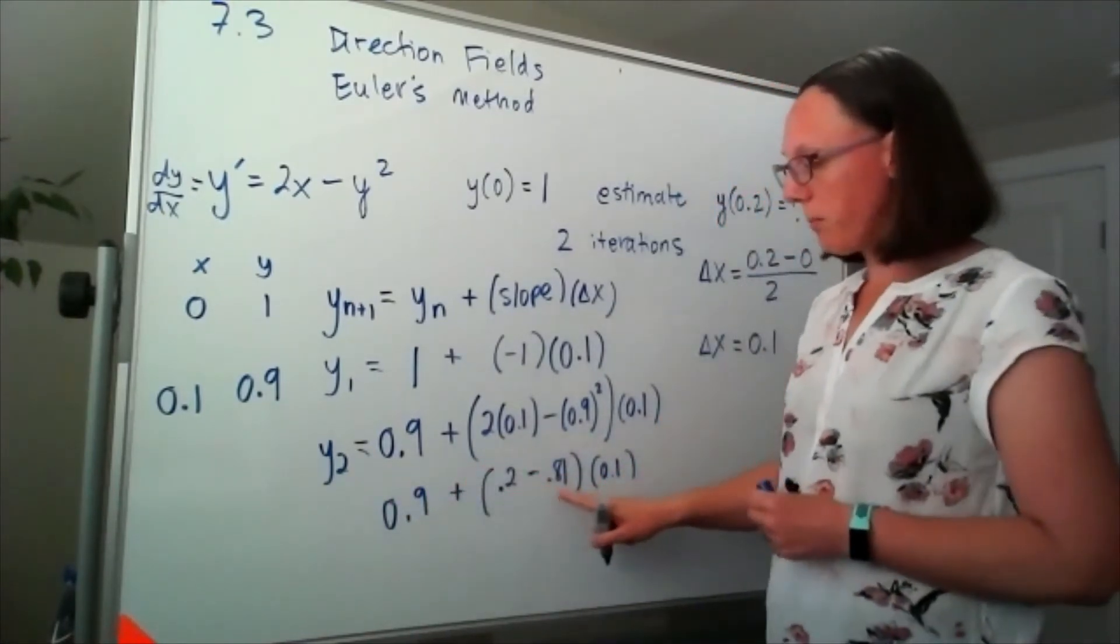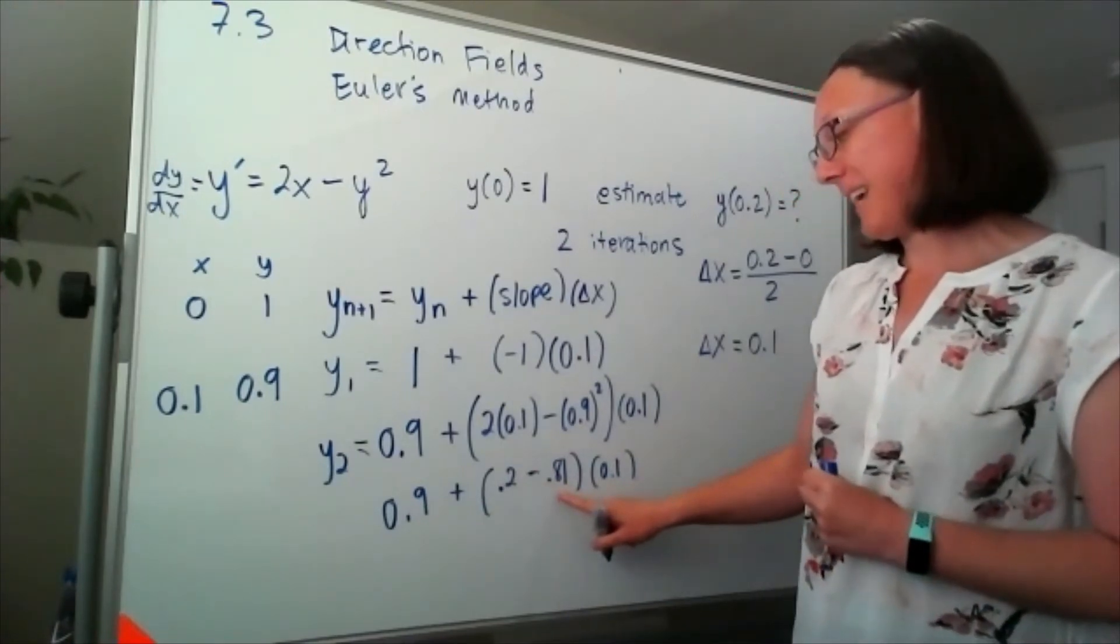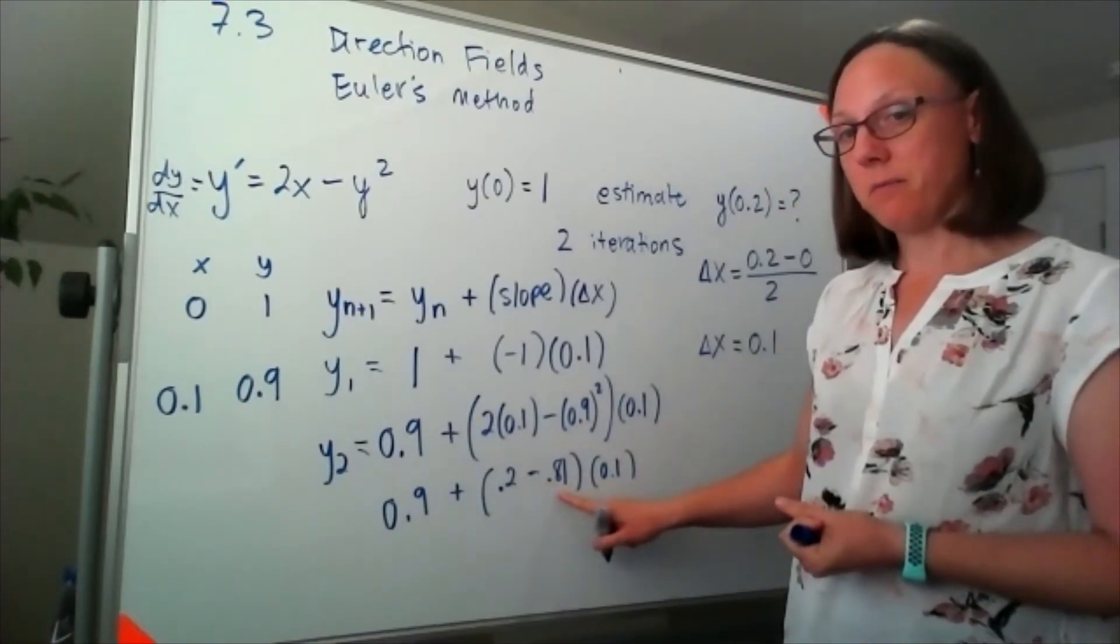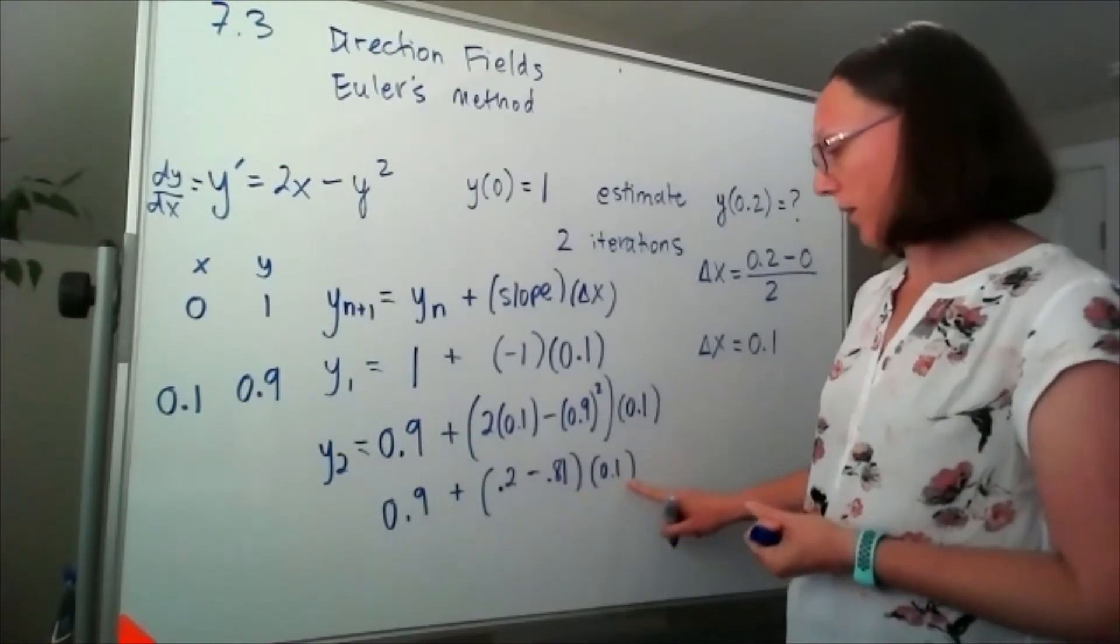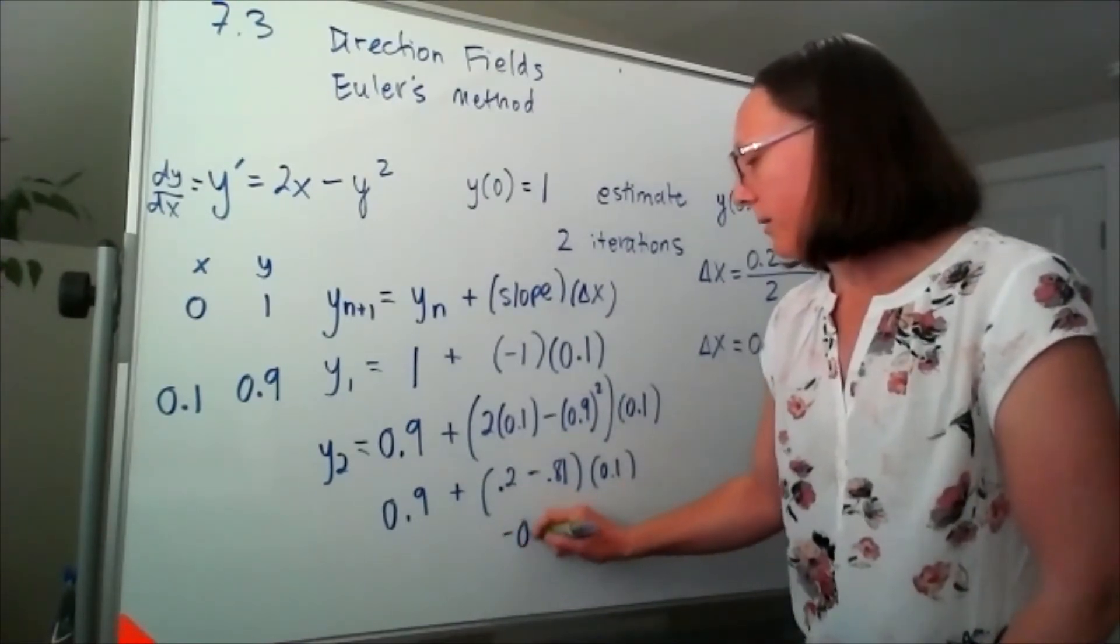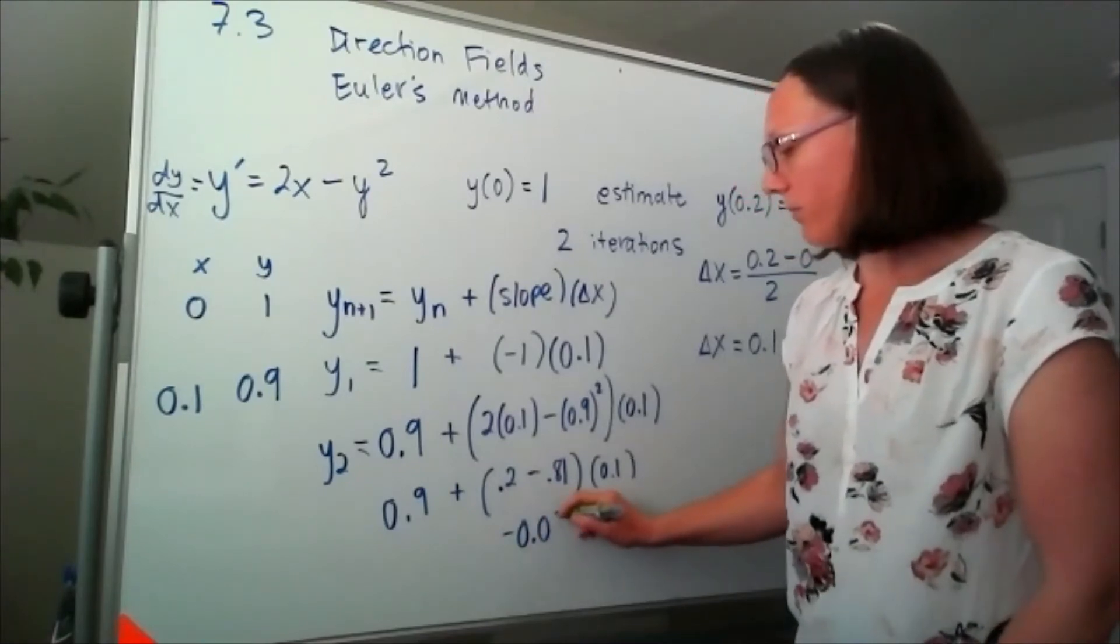So 0.2 minus 0.81 looks like that's going to give me a negative 0.61, and then times the 0.1, I'd be at negative 0.061.